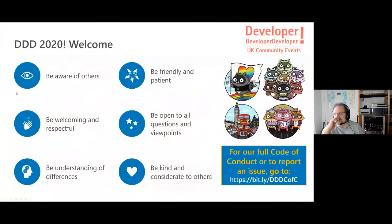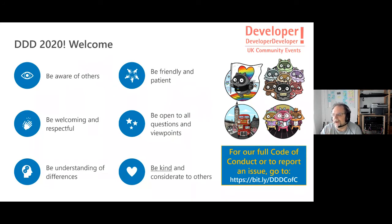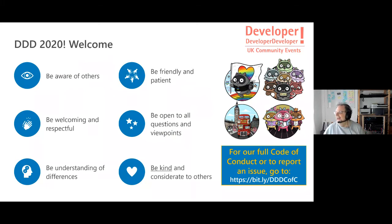I would like to read our code of conduct, which in summary says: be aware of others, be friendly and patient, be welcoming and respectful, be open to all questions and viewpoints, be understanding of differences, be kind and considerate to others. These are six good rules to live by, not only at DDD 2020. If you want to read the full code of conduct or report an issue, you can go to HTTPS bit.ly slash DDD C of C.